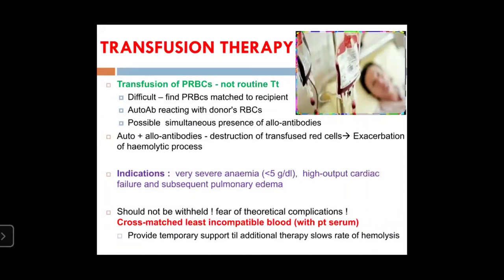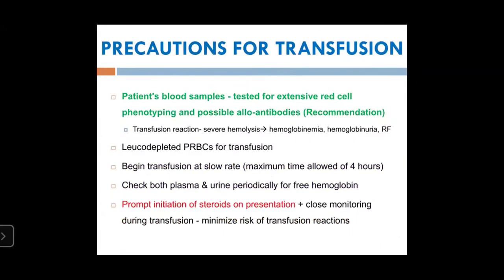When choosing blood for transfusion, select the least incompatible unit cross-matched with patient serum. Transfusion provides temporary support while additional therapy slows hemolysis. Precautions: extensive red cell phenotyping beyond ABO and Rh, use leukodepleted RBCs, give only 3–5 mL/kg at a slow rate (maximum 4 hours), and periodically check urine and plasma for free hemoglobin due to risk of transfusion reaction and hemoglobinuria.